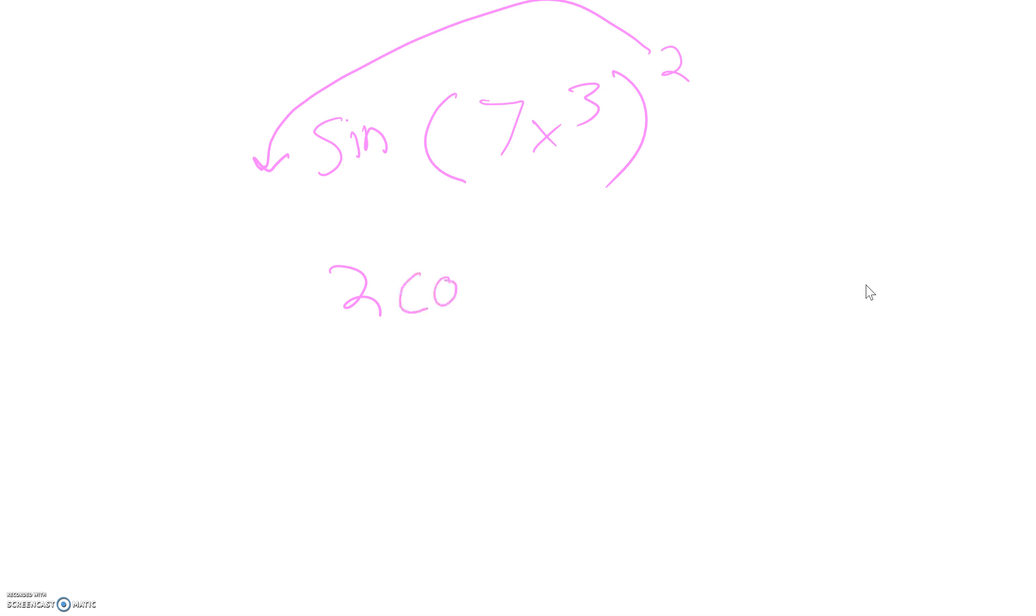So, cosine of 7x cubed. It's going to be to the first because it's just to the 2 minus 1. So, that's just to the first. And then, you've got to circle this because this is your x in this case. And you've got to take the derivative of that.